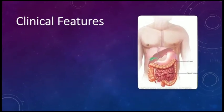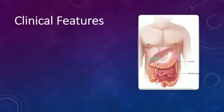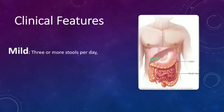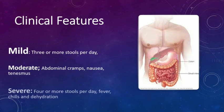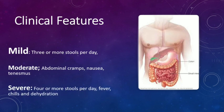Here are the clinical features of diarrhea. The severity can be divided into three: mild, moderate and severe. In mild: three or few more stools per day. In moderate: four or more stools per day also associated with symptoms such as abdominal cramps, nausea and tenesmus. In severe: four or more stools, fever, chills and dehydration.